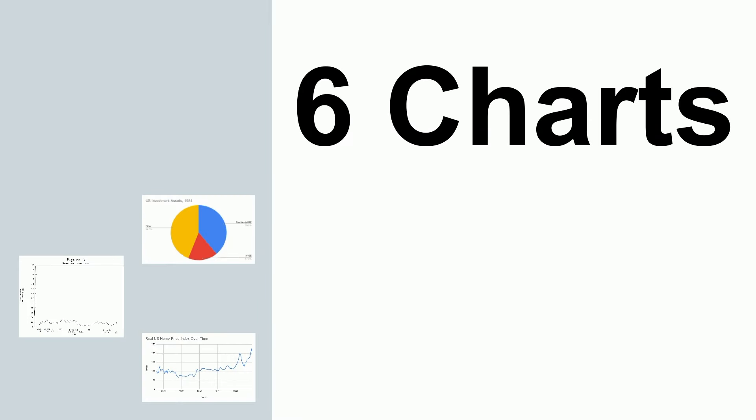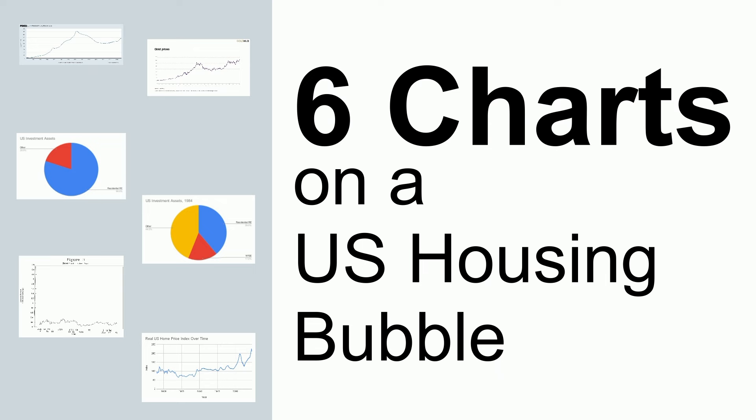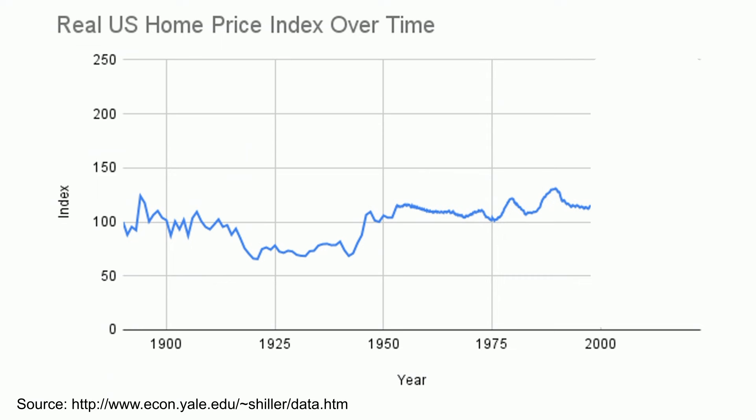Here are six charts to help you decide if there is a U.S. housing bubble right now. Chart number one: between 1890 and 1990, a period of 100 years, price appreciation on U.S. homes in inflation-adjusted, real terms was practically zero.